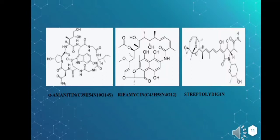Rifamycin binds to the beta subunit of prokaryotic RNA polymerase and acts as an inhibitor of transcription at the initiation stage. It is a bacterial transcription inhibitor and does not work on eukaryotes. Streptolydigin is an antibiotic that inhibits RNA polymerase by reducing the rate of RNA chain growth, but does not affect the fidelity of transcription.